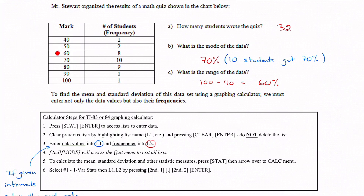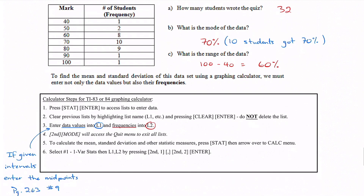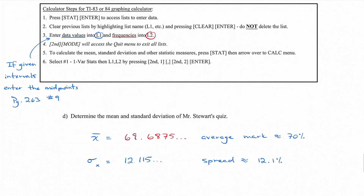One additional note: if you were given information as an interval — say from 40% to 45% rather than a single value — you would enter the middle number. So if you had 40 to 42, you'd enter 41 into your calculator. Anytime you're given an interval, put in the middle number.